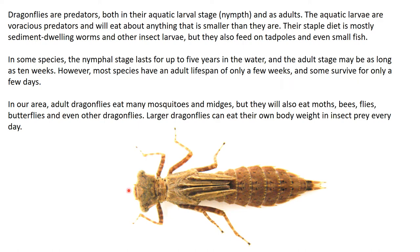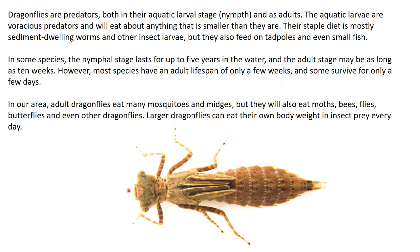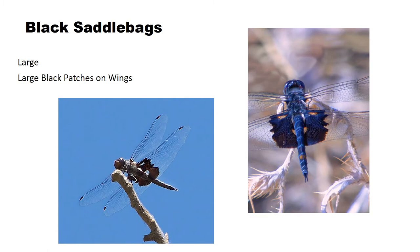The first dragonfly to learn to identify is probably the easiest one — it's called the black saddlebags. It's a large dragonfly, about three inches by three inches, and it's pretty easy because on the hindwings it has two big black blobs. Whether it's landed or flying, if you see anything with those two big black blobs on it, that's a black saddlebags.